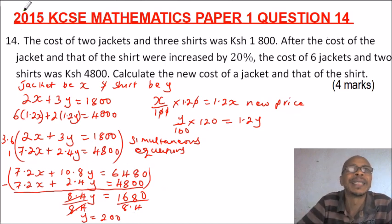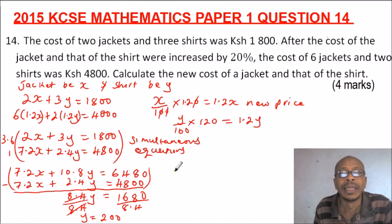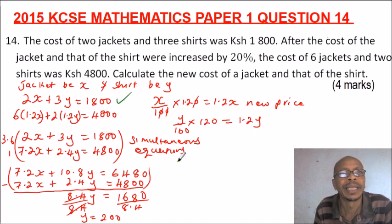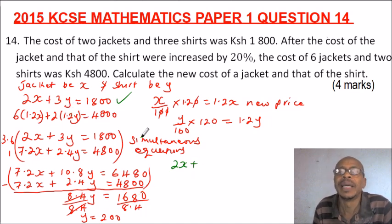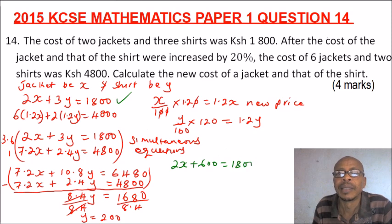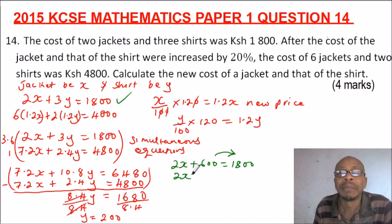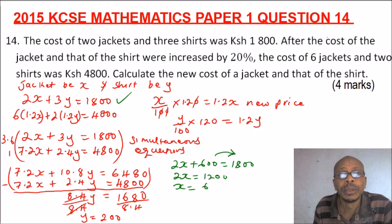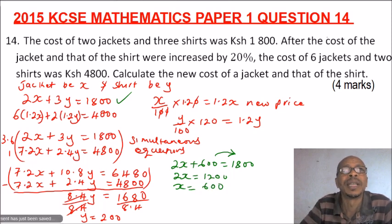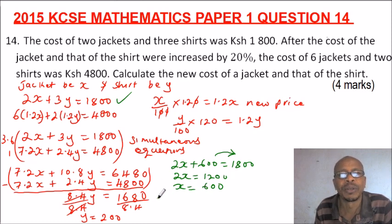Now that y = 200, we substitute back into the first equation to find x. We say 2x + 3 multiplied by 200 = 1,800, which gives 2x + 600 = 1,800. Taking 600 to the other side: 2x = 1,200, so x = 600. The cost of a jacket is 600 and the cost of a shirt is 200.